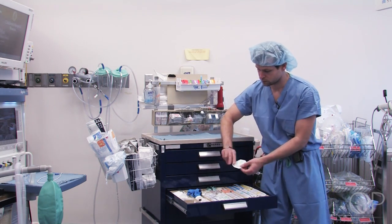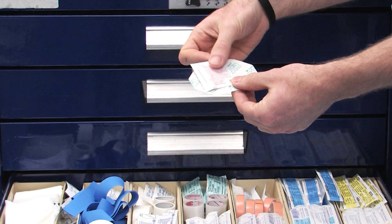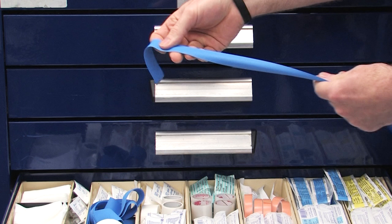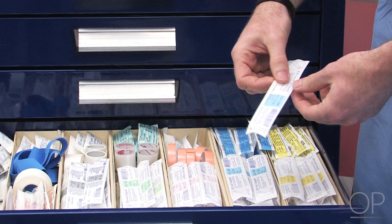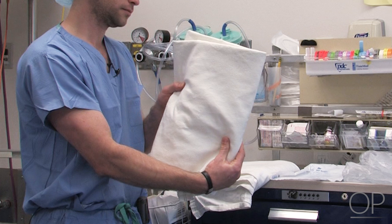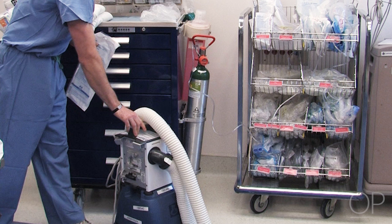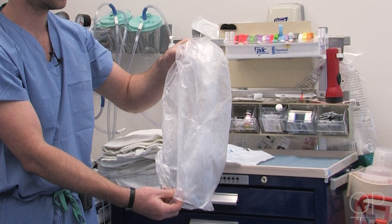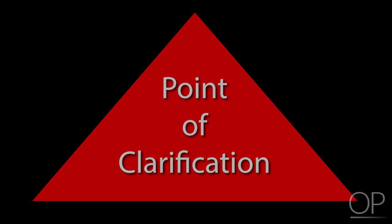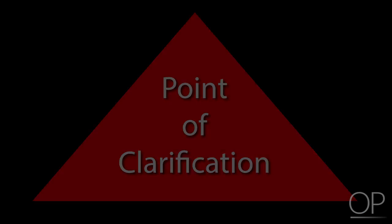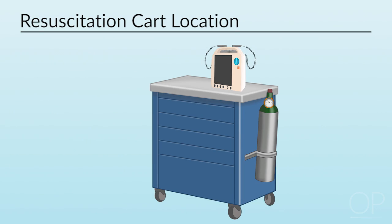Materials to secure intravenous access must also be immediately available. These include tape, alcohol prep pads, tourniquet, an appropriately sized IV catheter, and materials for ensuring normothermia including blankets, a forced air warming device, or plastic wrap. It is important to be aware of the location of the resuscitation cart including the defibrillator in your operating room suite.